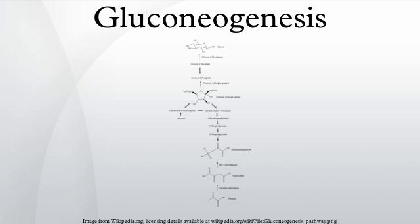In humans, the main gluconeogenic precursors are lactate, glycerol, alanine, and glutamine. Altogether, they account for over 90% of overall gluconeogenesis. Other glucogenic amino acids, as well as all citric acid cycle intermediates — the latter through conversion to oxaloacetate — can also function as substrates for gluconeogenesis. In ruminants, propionate is the principal gluconeogenic substrate.